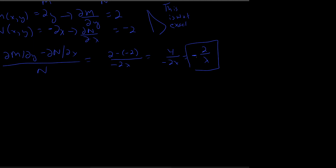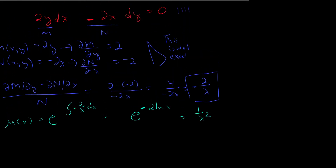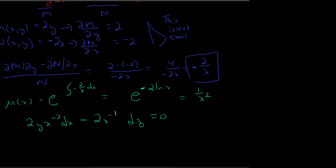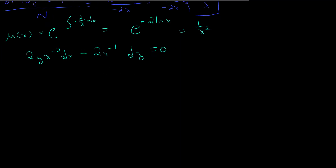I want to find my integrating factor: μ = e to the integral of (-2/x) dx, which is e to the (-2 ln x), or 1 over x squared. I multiply that by the equation: I get 2y·x⁻² dx minus 2x·x⁻¹ dy equals 0, which simplifies to 2y·x⁻² dx minus 2x⁻¹ dy equals 0. I now have an exact equation. I'm going to solve this exact equation, and the function I get out of it will be my orthogonal trajectory.